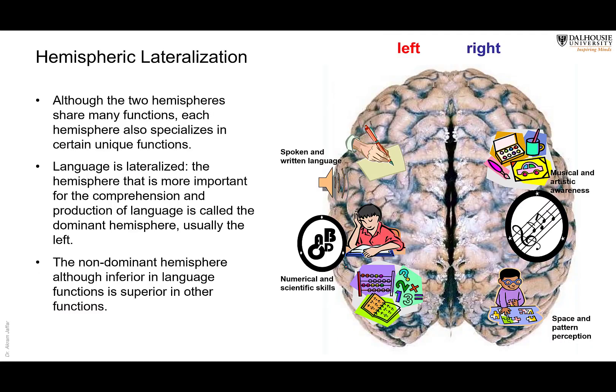Regarding the right and left cerebral hemispheres: dominant doesn't mean the other hemisphere is inferior. Dominant means it has the language functions. The non-dominant hemisphere has other qualities — it recognizes the art of music and painting, making it the artistic hemisphere. By contrast, the dominant hemisphere is the language hemisphere, also serving calculation and science. Both hemispheres work together.